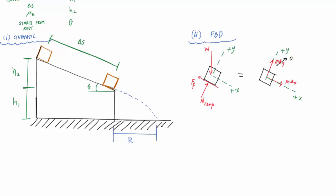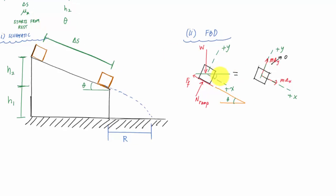One of the challenges is always the geometry. This line represents the ramp and has angle theta there. If I draw a horizontal line here, this is also angle theta. The angle between y and the horizontal is 90 minus theta, which makes this also theta. Now I can write the equations of motion using the rectilinear coordinate system.